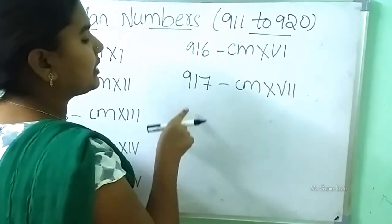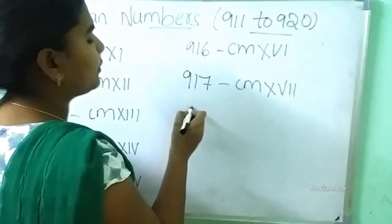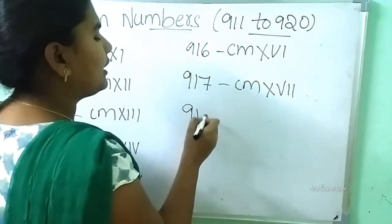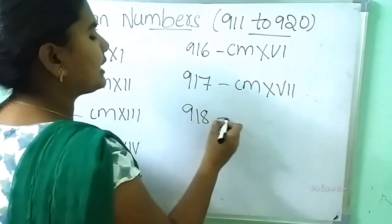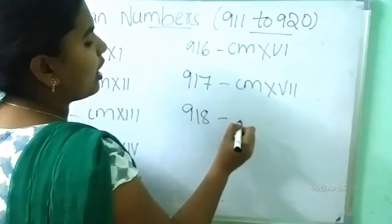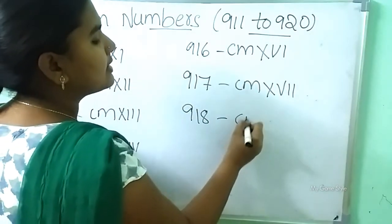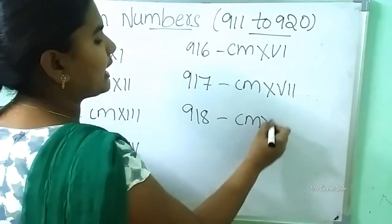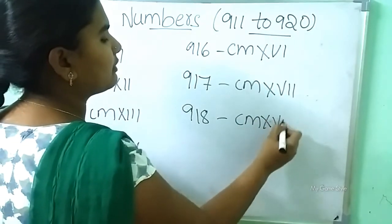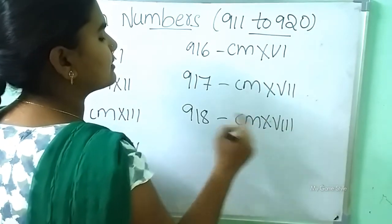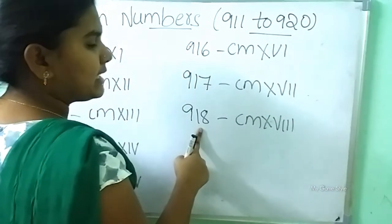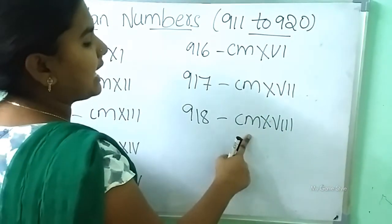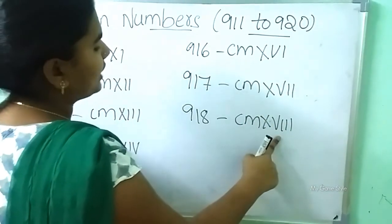After 917, what number will come? 918. Now how to write? CM is 900. XVIII is 18. So this means 918, written as CMXVIII.